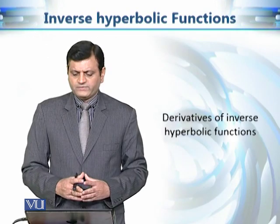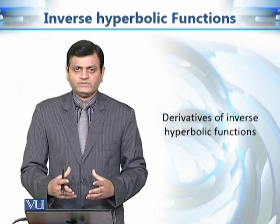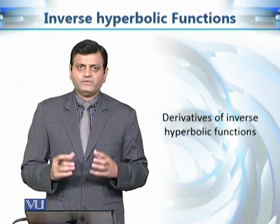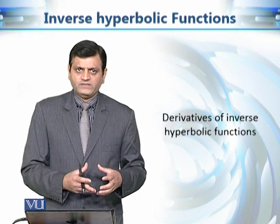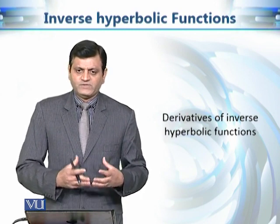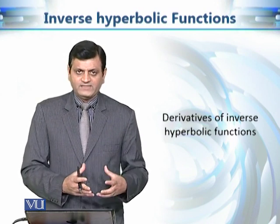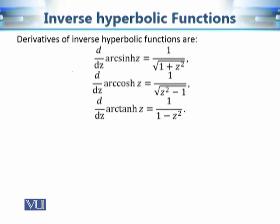Now let us talk about the derivatives of these inverse hyperbolic functions. Since these are multivalued functions, when we discuss their derivatives we mean the derivative of the principal branch. As shown on the screen: the derivative of arc sine hyperbolic z is 1 over the square root of 1 plus z squared; the derivative of arc cosine hyperbolic z is 1 over the square root of z squared minus 1; and the derivative of arc tangent hyperbolic z is 1 over (1 minus z squared).